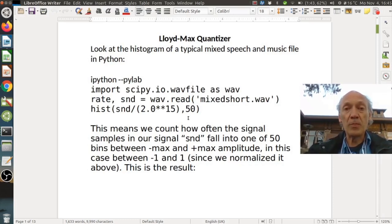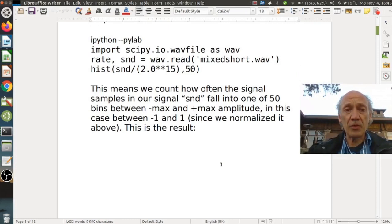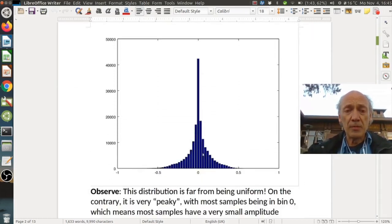And for each bin it counts how many times a sample falls into it. Yeah, and this is basically then a scaled probability density function. So here we can see the result. Basically on the vertical axis we have the number of samples that fall into this bin. And on the vertical axis you can see the bin boundaries. And what we see in the middle is the zero bin, the bin around zero.